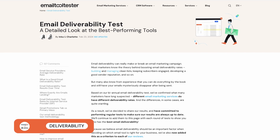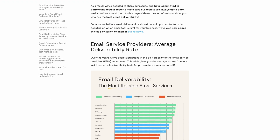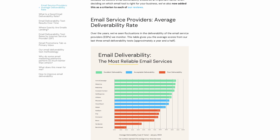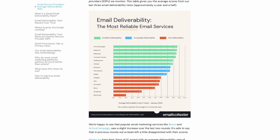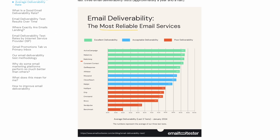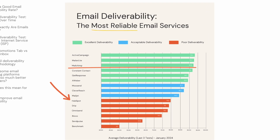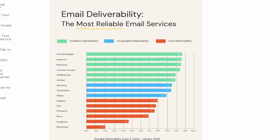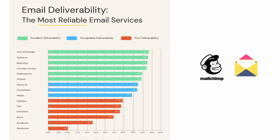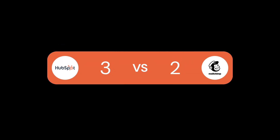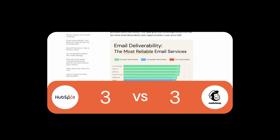Now let's look at an important but often overlooked topic: email deliverability. In our latest deliverability tests, MailChimp ranked in the top five out of 15 providers. HubSpot, however, is often hanging out in the bottom five, suggesting it has a lot of work to do in this area. While results may vary from sender to sender, MailChimp consistently outperforms HubSpot, taking out the deliverability round. Scores are now even at HubSpot 3, MailChimp 3.